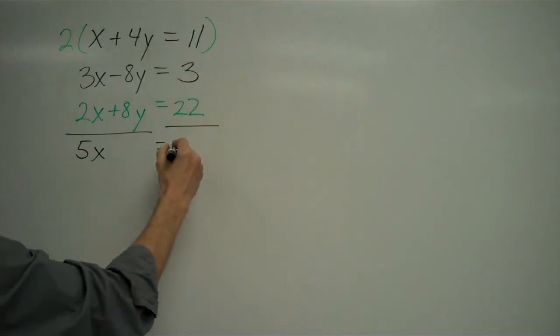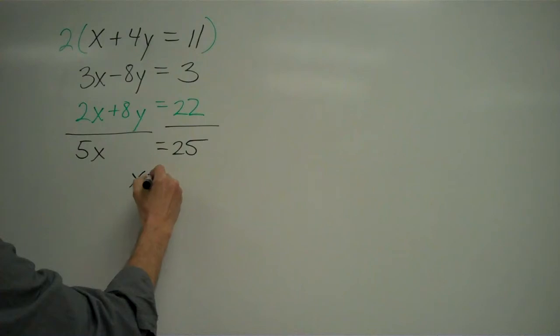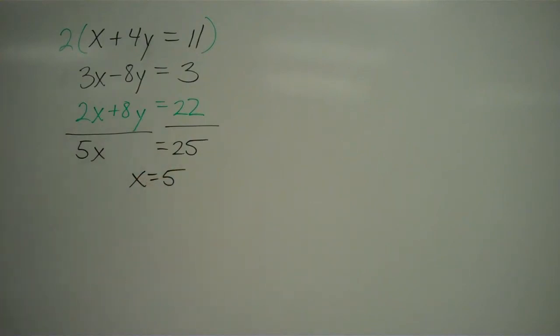3 plus 22 gets me 25. Now I have a very easy equation to solve: 5x equals 25. I divide both sides by 5 and I get x equals 5. I'm not done yet.